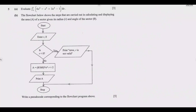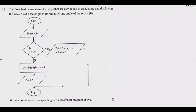That gets you the three marks for Question A. Now we move to Question B, which is worth 5 marks. The flowchart shows steps for calculating and displaying the area of a sector given its radius r and angle theta. We start, then enter radius and theta, ask if r is less than zero — if yes, print 'error is not valid'; if no, calculate area as theta/360 times pi times r squared, print the area, then stop.